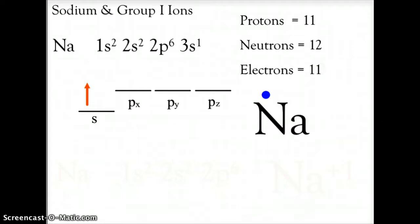Let's begin with sodium, and we'll use sodium as the representative element for group 1 ions, which is the first column of the periodic table, the alkali metals. For sodium, we have an electron configuration of 1s² 2s² 2p⁶ 3s¹, and that gives us 11 protons, 12 neutrons, and 11 electrons.